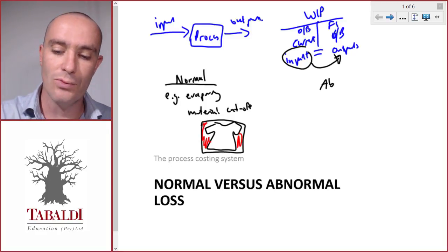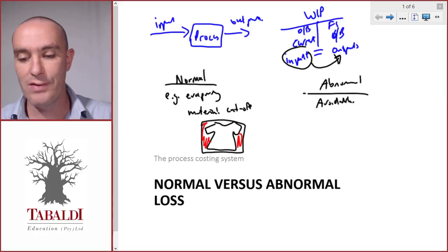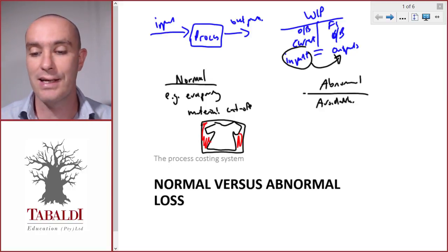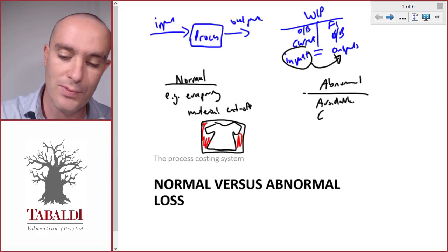What about abnormal losses? Abnormal losses are avoidable. They shouldn't be happening. If there's an abnormal loss, it indicates that there's a problem that needs to be addressed. And we also call them controllable.